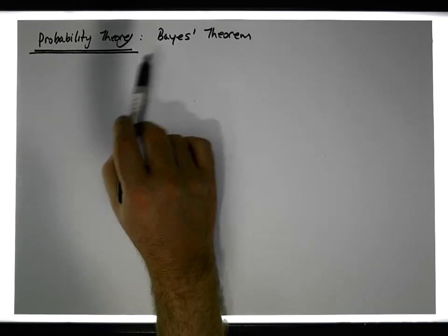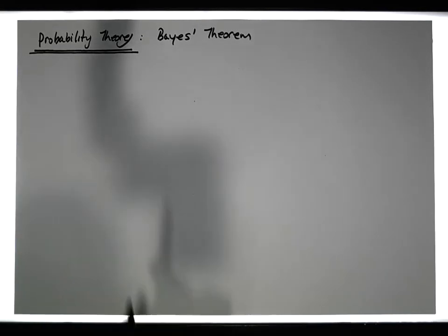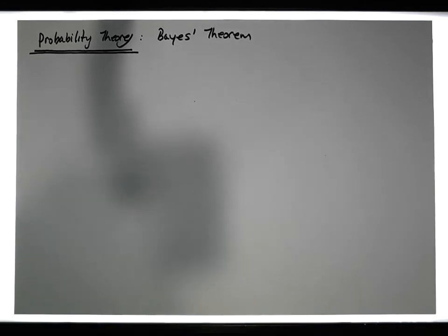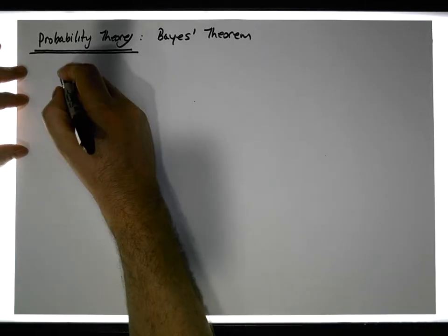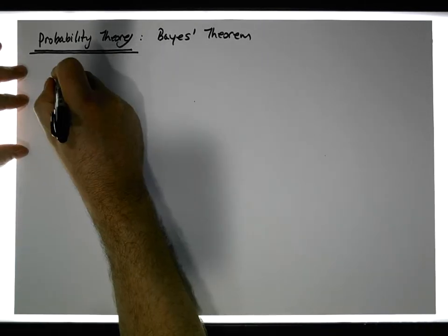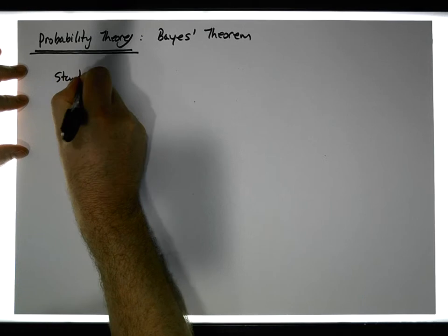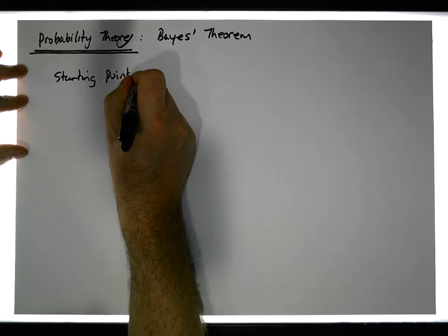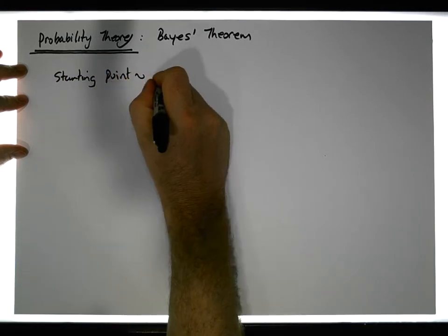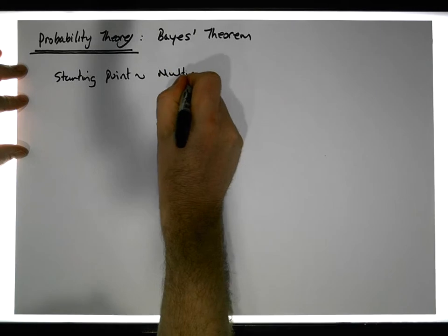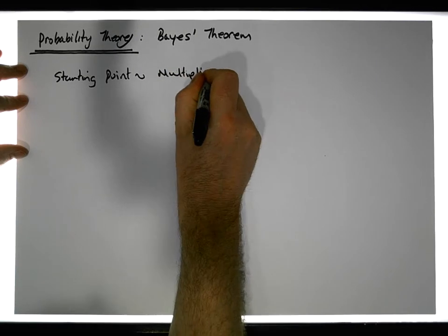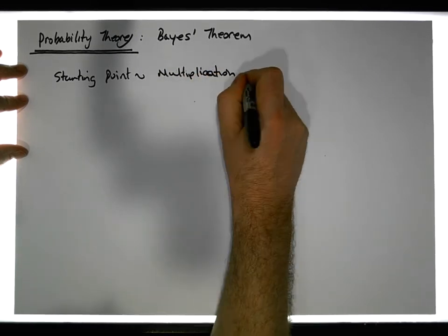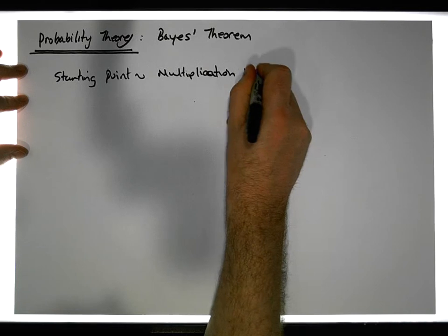What we want to do is explore Bayes' theorem, and where we're going to start is with the multiplication rule. That's our starting point — the multiplication rule in probability.